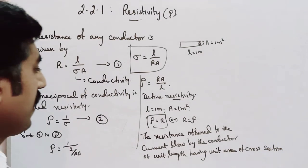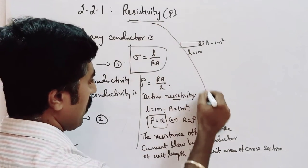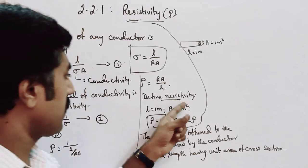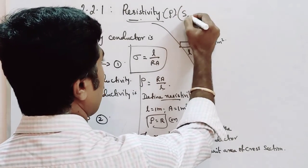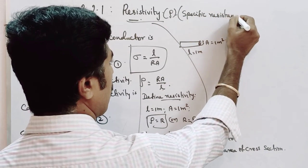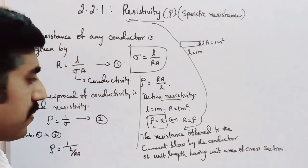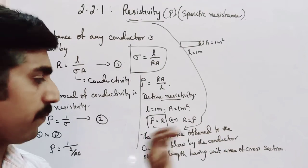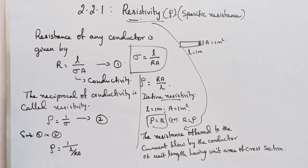So this is called resistivity. Resistivity has another name, which is specific resistance. Specific resistance or electrical resistivity of a conductor is defined as the resistance offered to the current flow by the conductor of unit length having unit area of cross section. There are many ways to state this definition.